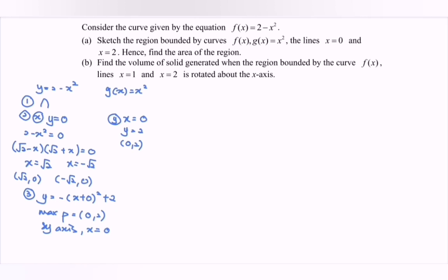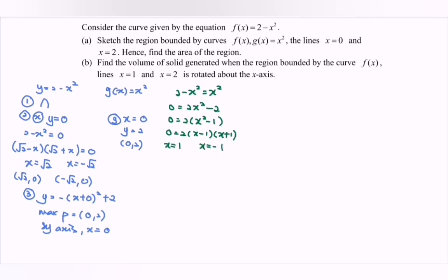Next we are going to find the intersection point between the two graphs f and g. Equating them, since g(x) is also y, we have 2 minus x squared equals to x squared. Rewriting: 2x squared minus 2 equals to 0. Factor out 2, then we have x squared minus 1, which factors as (x minus 1)(x plus 1). So x equals to 1 and x equals to negative 1, giving y equals to 1 in both cases. The intersection points are (1, 1) and (−1, 1).